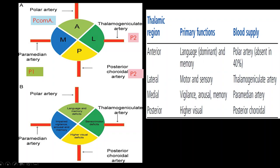The thalamus can be divided into four parts: anterior, lateral, posterior, and median. The anterior part is supplied by the polar artery, a branch of the posterior communicating artery. The lateral part is supplied by the thalamogeniculate artery, a branch of P2. The posterior part is supplied by the posterior choroidal artery, also a branch of P2. The medial part is supplied by the paramedian artery, a branch of the P1 segment.